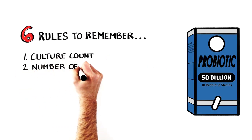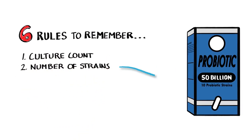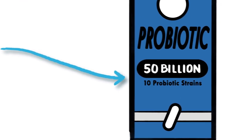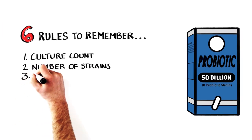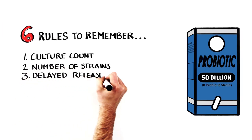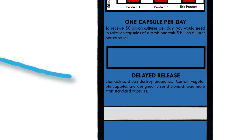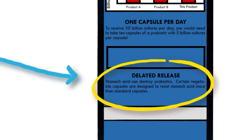The second rule is the number of strains. You want your probiotic to include several different types of bacteria. Choosing a probiotic with at least 10 strains is a good start. Third is to make sure your probiotic has a delayed release. This is important since a delayed release is designed to resist stomach acid and help deliver the probiotics to the intestines where they are needed most.